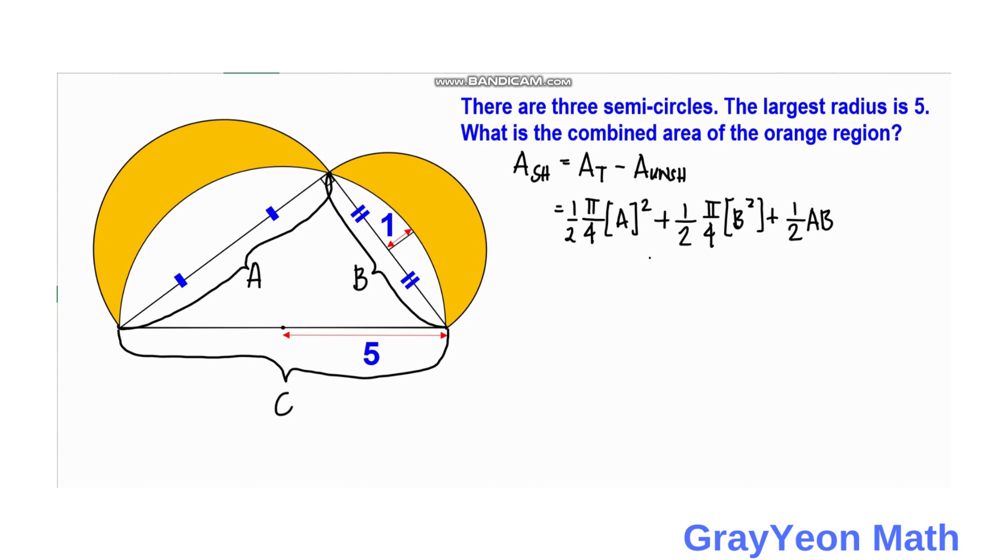Then, since we are actually looking for the orange, then from the total, we need to subtract the area of the biggest semicircle to get the orange, as you can see. So we need to subtract 1 half, since again this is a semicircle, pi over 4, times D squared. I mean, oh yes, D squared, but the diameter squared is equal to C squared. Okay, so next is we multiply this 4 times 2. This would be 8, this would be 8, and this would be 8.